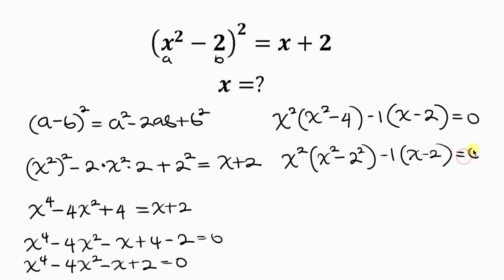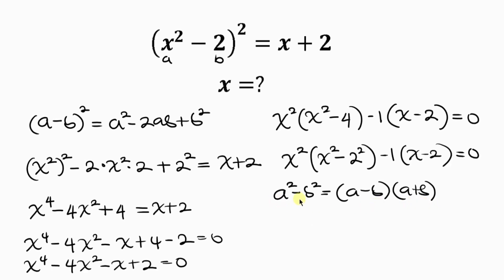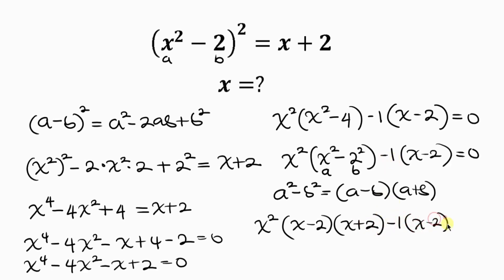Notice that x² - 4 inside the parenthesis is in the form of a difference of two squares, which has the identity a² - b² = (a - b)(a + b). Comparing, a = x and b = 2. So x² - 4 = (x - 2)(x + 2). Thus we have x²(x - 2)(x + 2) - 1(x - 2) = 0.